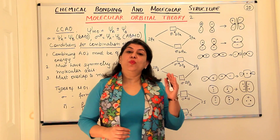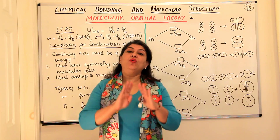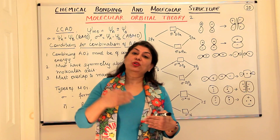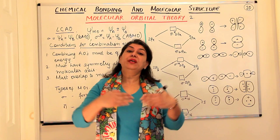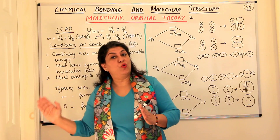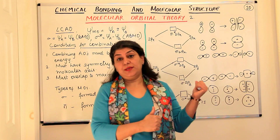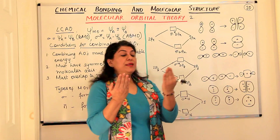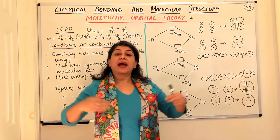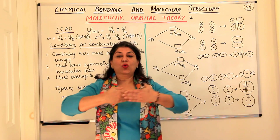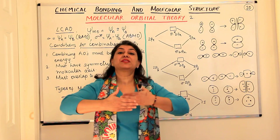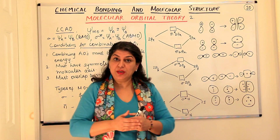We had studied in the Valence Bond theory that the orbitals overlap with each other, and we studied about effective overlaps—how the positive lobe should fall on the positive lobe, how the orientation of the orbitals should be the same. The overlap is possible only when similar lobes fall over each other, and bonding is only effective when there is a proper overlap between the orbitals.